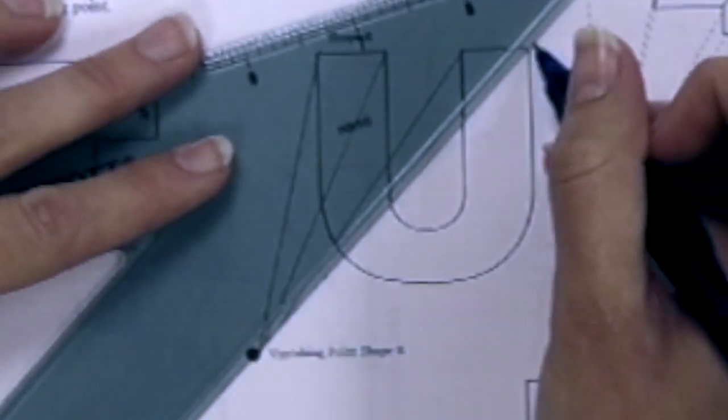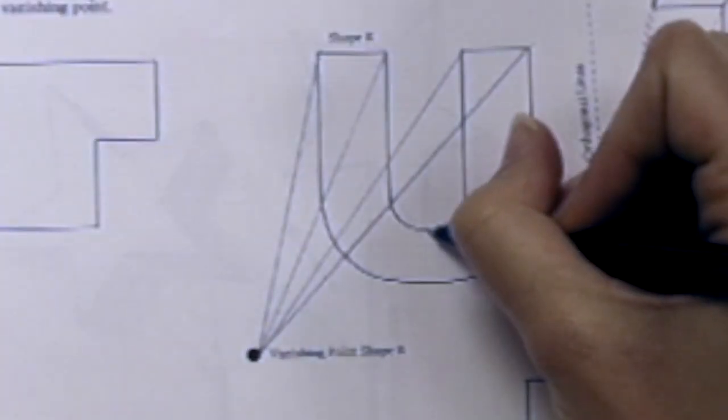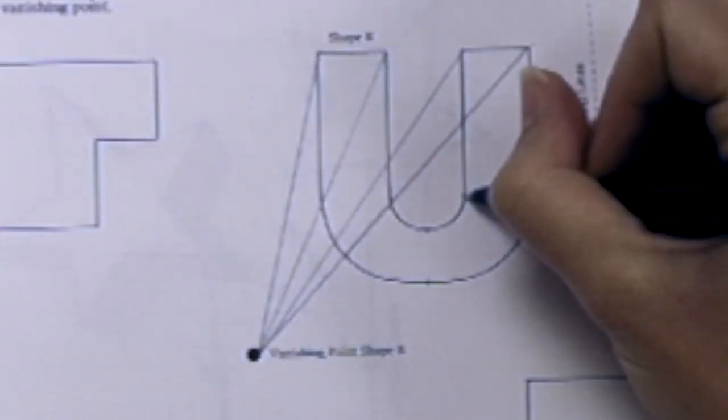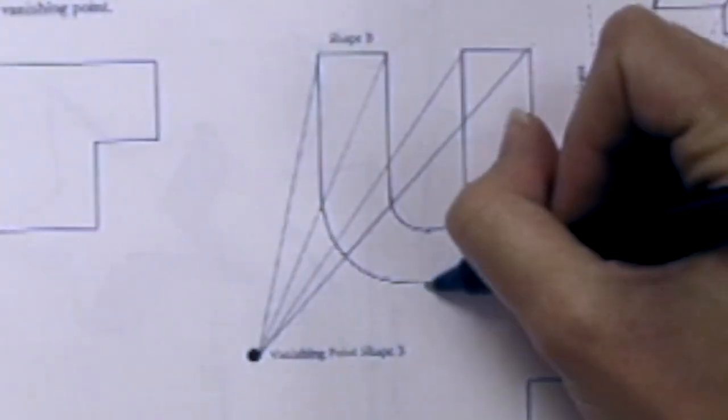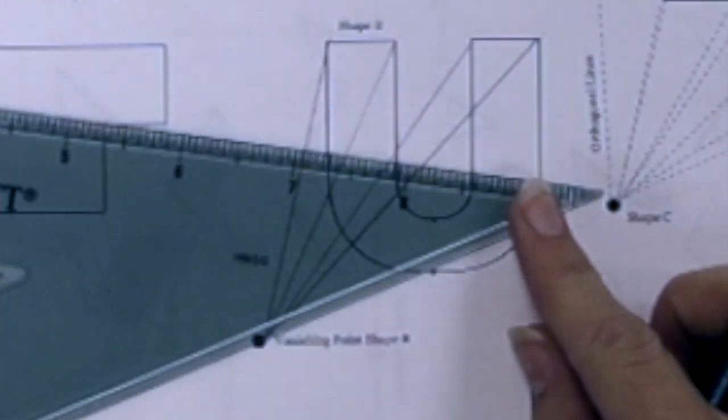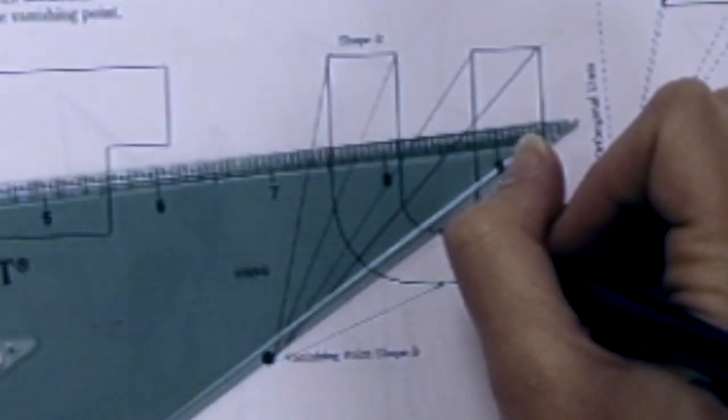This is going to be kind of a tricky one because now we have curves. I'm adding some extra points to give me guidelines for where the lines will change from straight to curved when I draw the back side of the box.